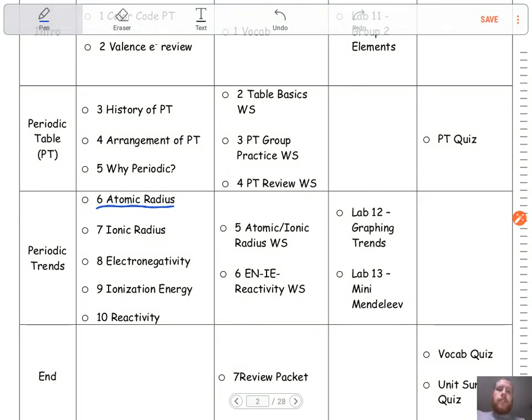Hey guys, this is Unit 4 Video 6 about the atomic radius periodic trend. At this point in the unit, all the groundwork is laid for how the periodic table is laid out. Now we're going to start looking at five specific trends that you'll be asked about on the Regents.